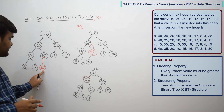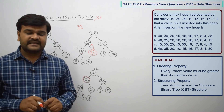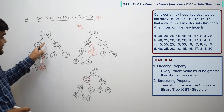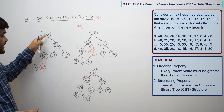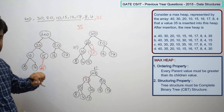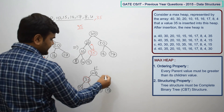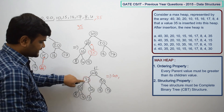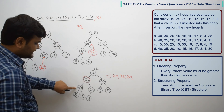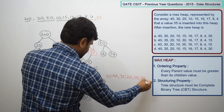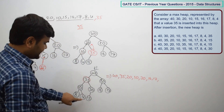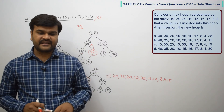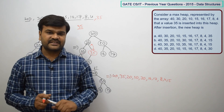The newly inserted node moves up until either the parent is greater, or it reaches the root. For example, inserting 50 would bring it all the way to the root. After all adjustments for 35, the final tree in level-order traversal gives the array: 40, 35, 20, 10, 30, 16, 17, 8, 4, 15. This corresponds to option B in the question.